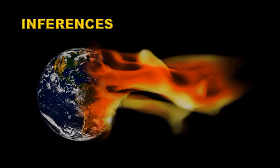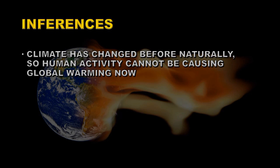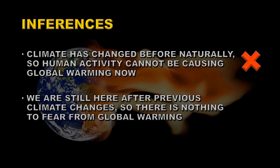There are two main inferences from that statement. One: the climate has changed before naturally without human intervention, so human activity cannot now be causing global warming. That inference is incorrect because the conclusion is not supported by the initial assertion. Two: we are still here after previous climate changes, so there's nothing to worry about from global warming. That conclusion is also not supported, and it ignores the fact that the climate might be changing in new ways and our current circumstances are different from those previous climate changes.